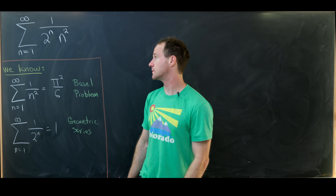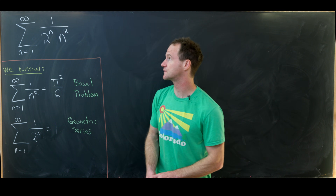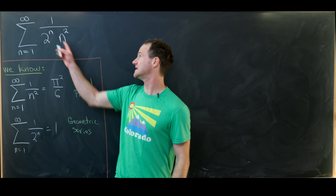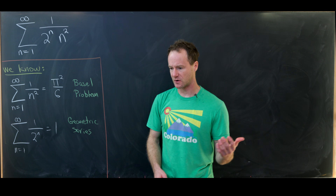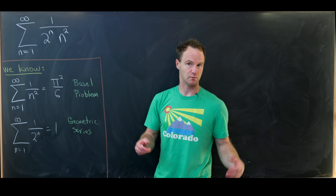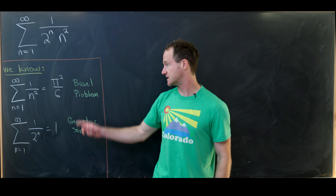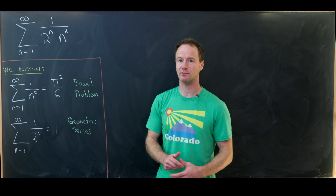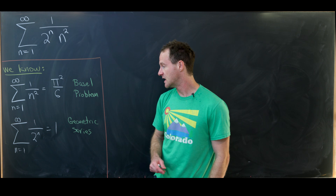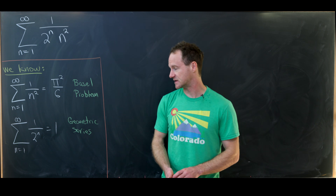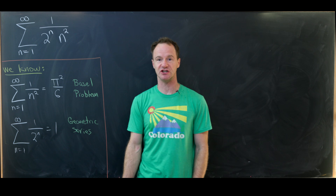Today I've got a nice infinite sum for you. We're going to calculate a closed value for the sum as n goes from 1 to infinity of 1 over 2 to the n times n squared. Before we get started, there are two related sums we already know: the sum of the reciprocal of the squares is pi squared over 6 — that's the famous Basel problem — and the sum as n goes from 1 to infinity of 1 over 2 to the n equals 1, because it's a simple geometric series.